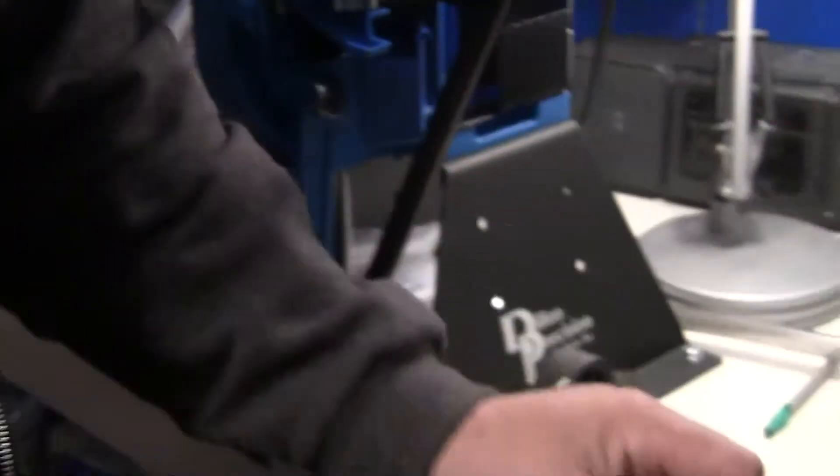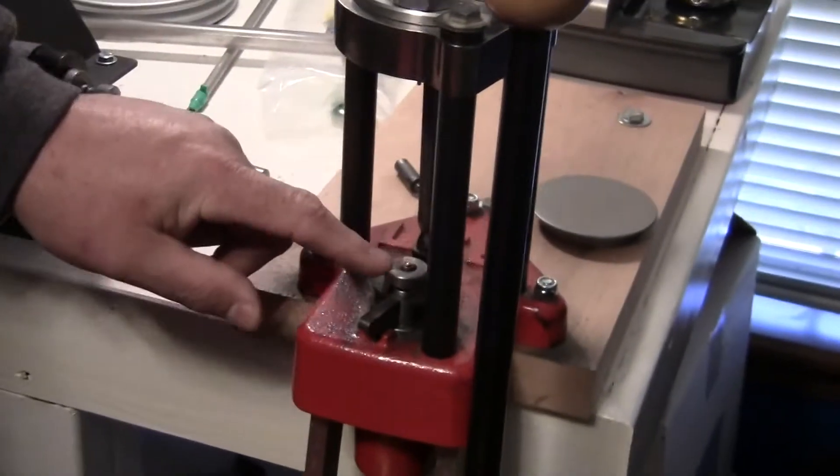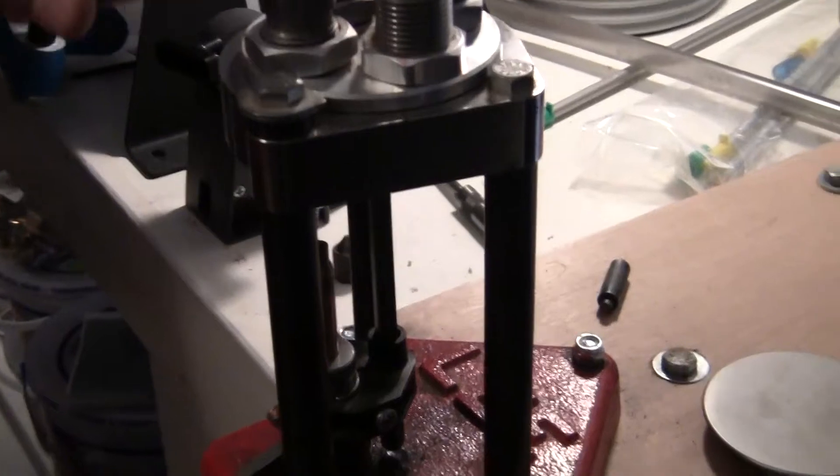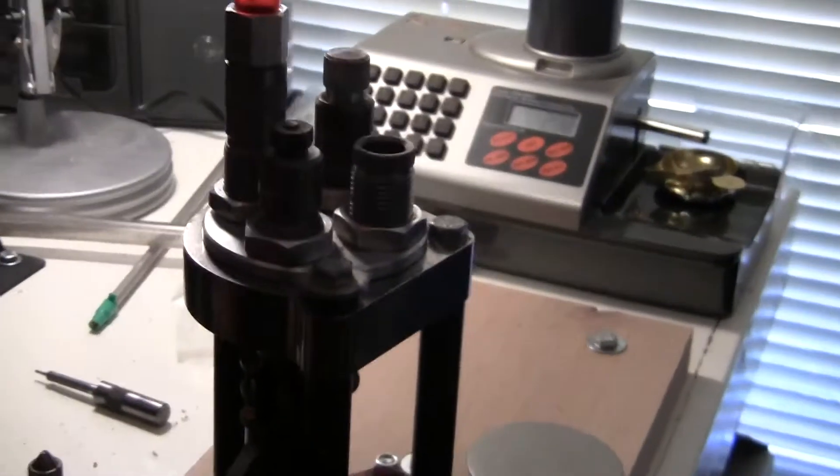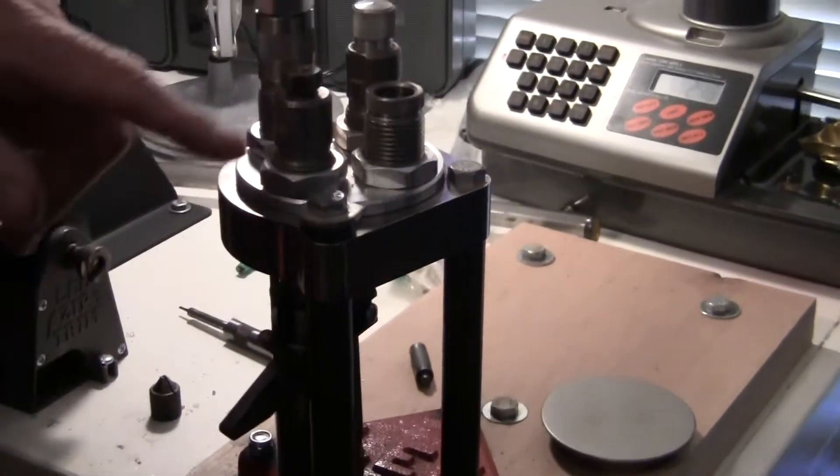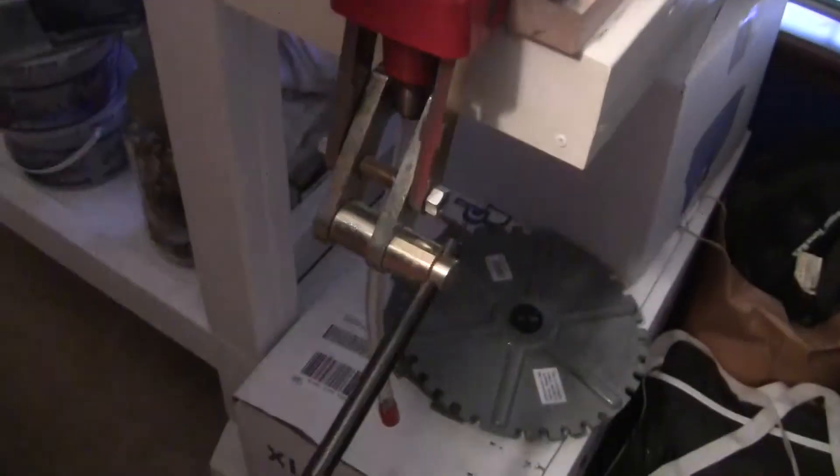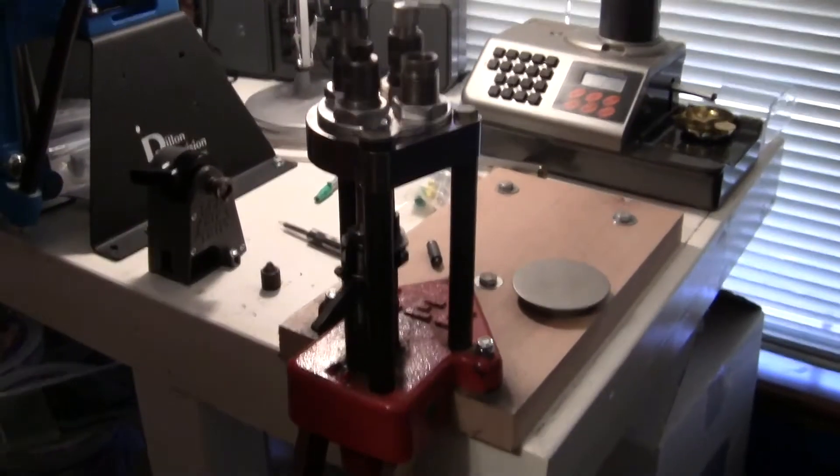Put the primer into the primer holder, raise the shell holder up, and then we'll run it into the sizing die. What it did: it sized the die, decapped, and it goes into this tube down here so it doesn't get on the floor. Pull it back out.